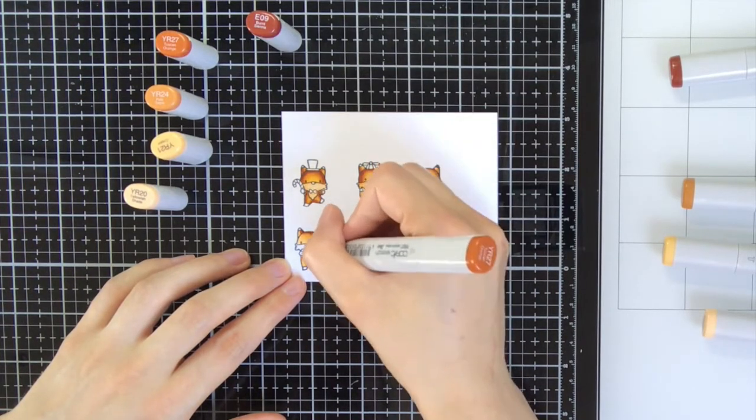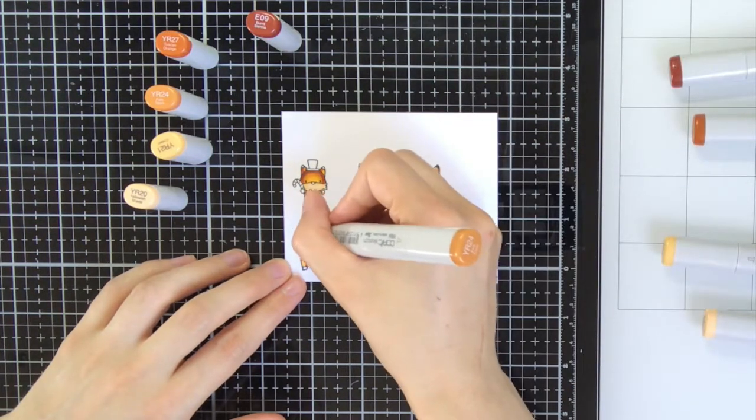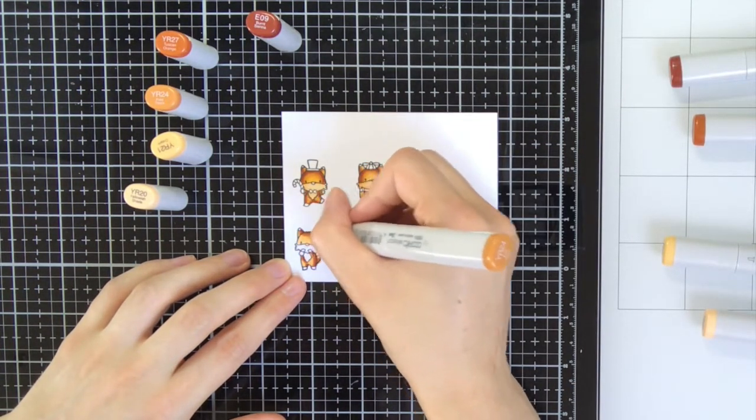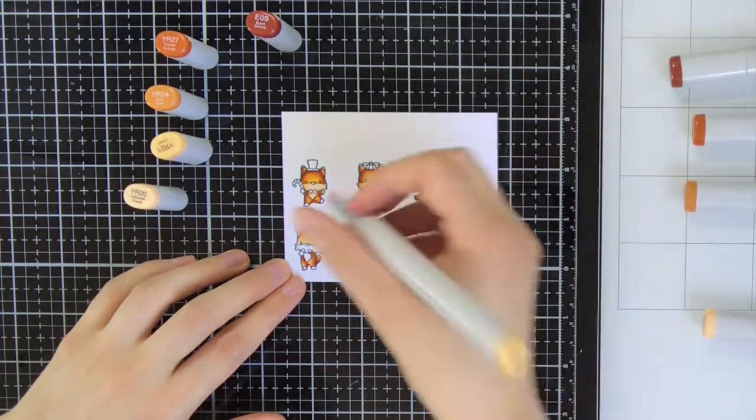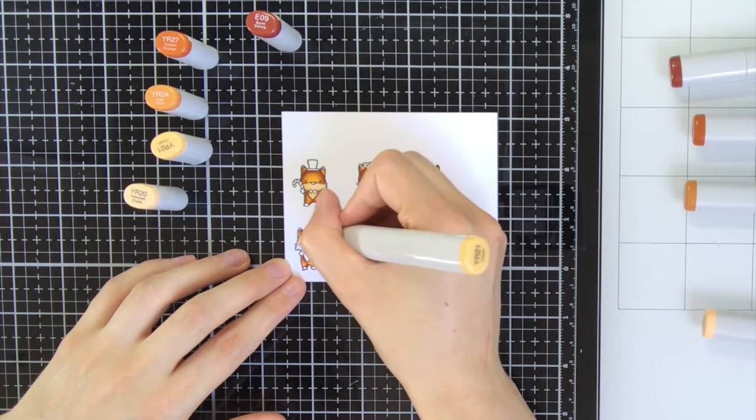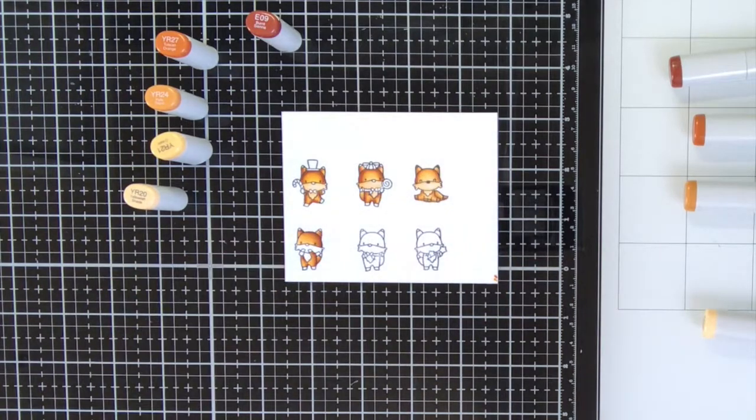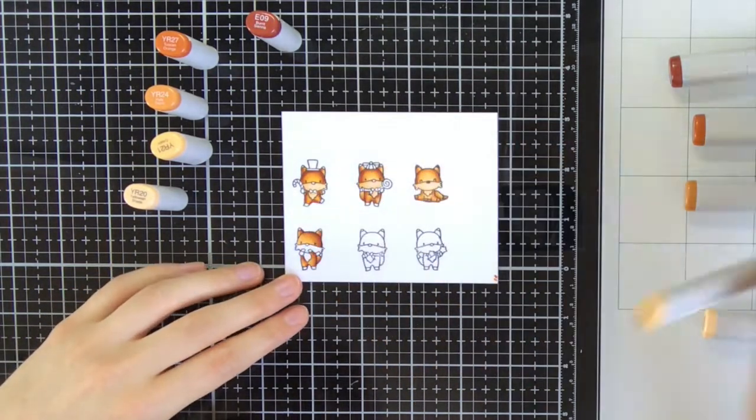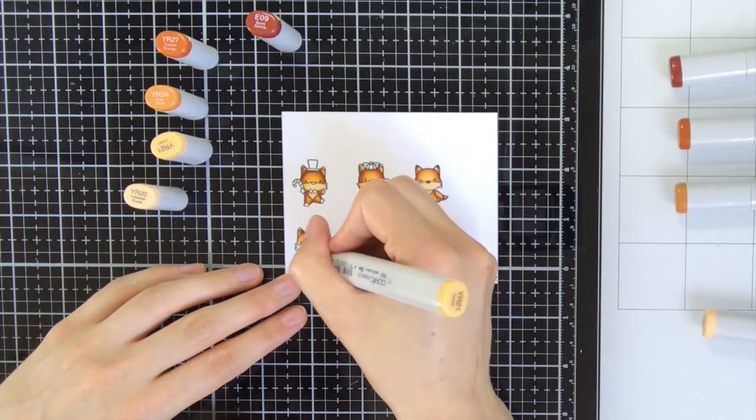Then for the second layer of that same fox I start with the E09. That E09 has this really nice brown reddish color which goes really nice with that YR27, YR24 combination. This combination of colors is my most favorite when it comes to coloring foxes. It just has that perfect red brownish color.